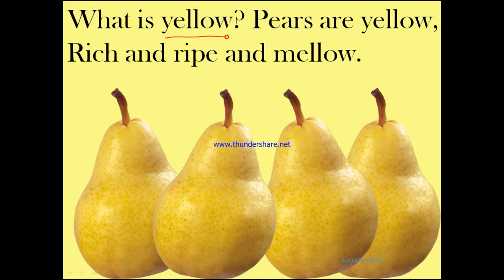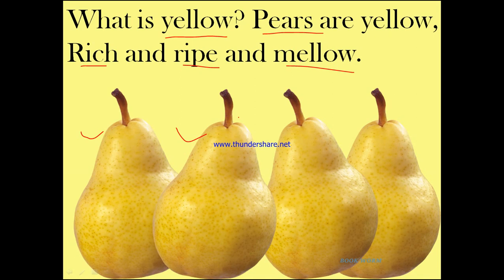What is yellow? She asks what is yellow in color. Pears are yellow. See the picture here — pear is a kind of a fruit, and pears are yellow. And these pears are rich, ripe, and mellow. That means these pears are very juicy, very soft — mellow means soft — so these pears are ripe, yellow in color, very soft and very juicy and very sweet.